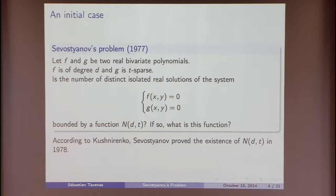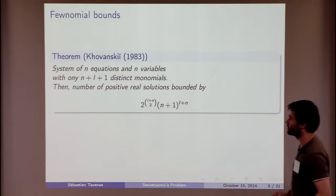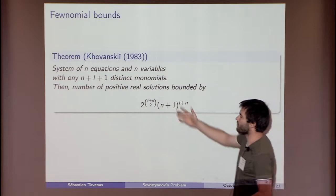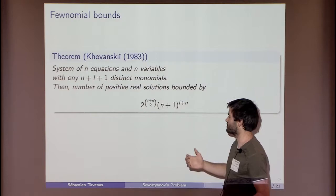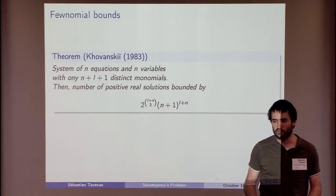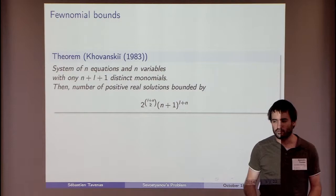Khovanskii, a few years later, proved something more general. His proof applies to more than just systems of polynomial equations, but if you have a system of polynomial equations where the number of distinct monomials is small, then it is possible to find a bound which bounds the number of real solutions of your system.